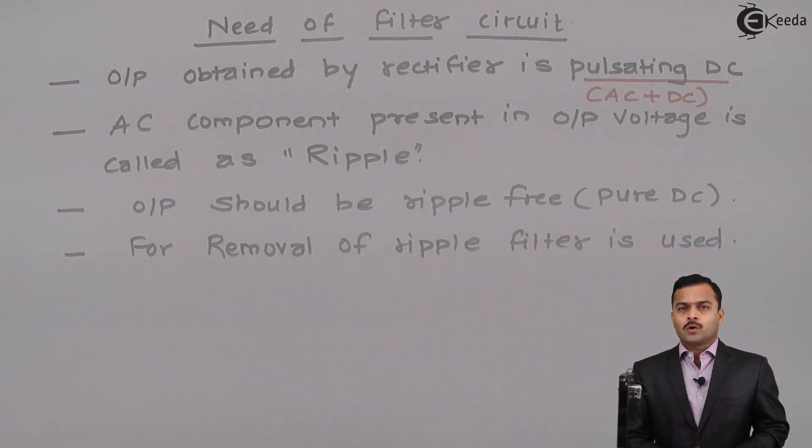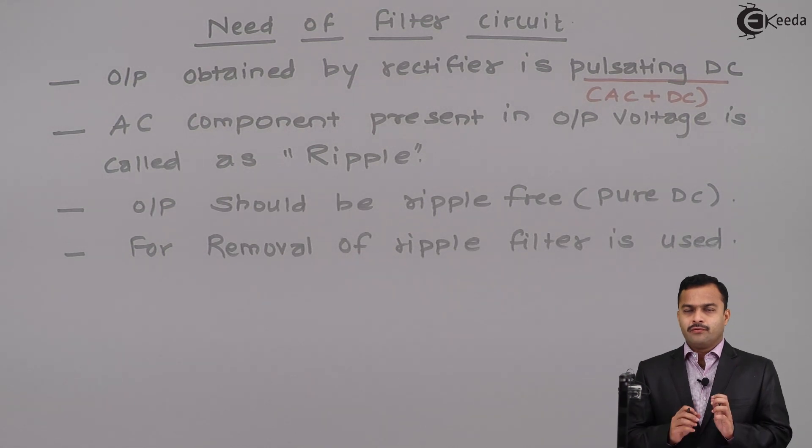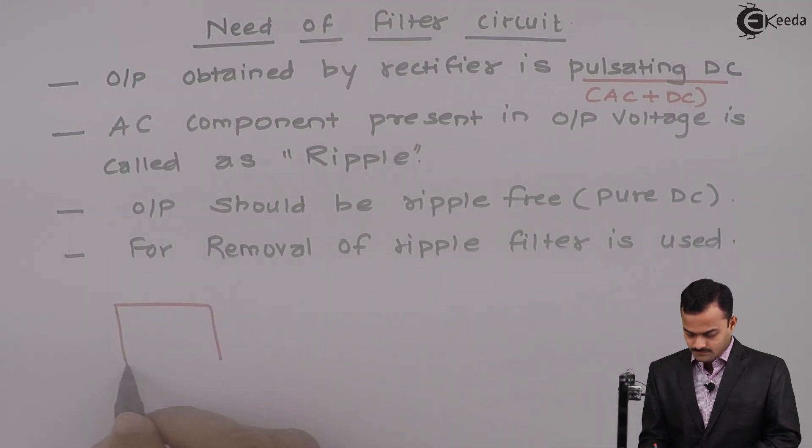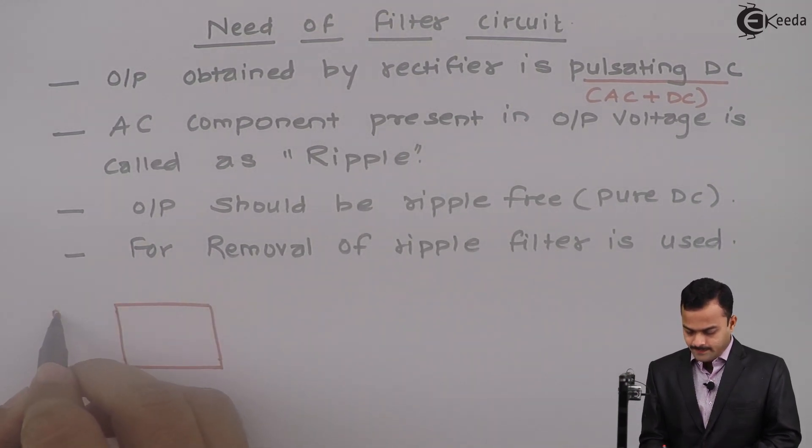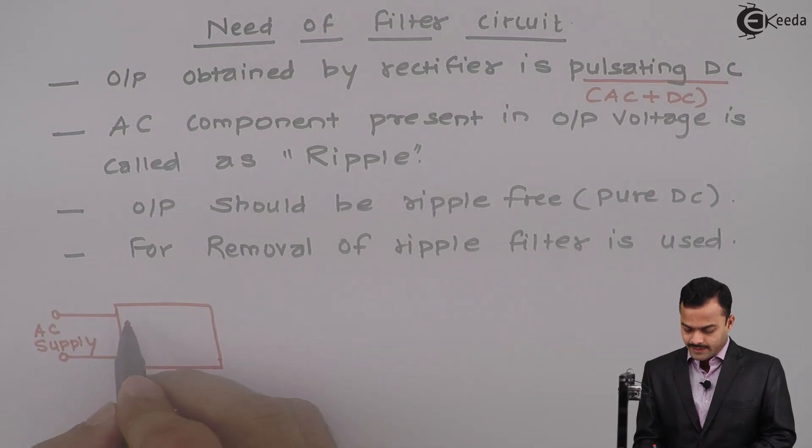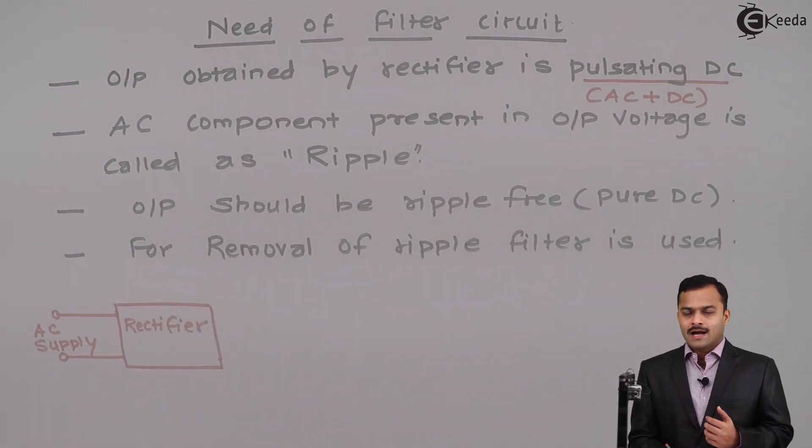Where we are going to connect this filter? The filter is connected between rectified output and final load. Let us draw a block diagram. Here the input is AC supply that passes through a rectifier circuit. This could be half wave rectifier, center tap full wave rectifier or bridge rectifier.